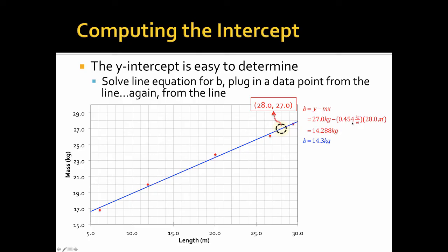Notice I brought along an extra digit with my slope to reduce round off error. When I'm done, I get 14.288 with my calculator. But I must realize that this number right here will have two digits. And this one will have three, but it ends at the first decimal. So I have to end my answer at the first decimal and my intercept becomes 14.3 kilograms.